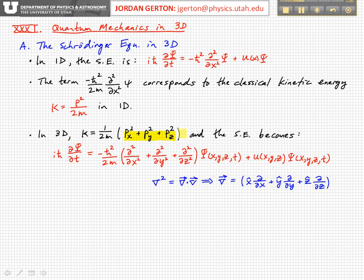then the Schrödinger equation becomes i h-bar d psi dt. This left side does not change compared to what we had up here. And now we substitute in the expressions that we have, basically operator expressions for px, py, and pz. So this will give you minus h-bar squared over 2m, d squared by dx squared plus d squared by dy squared plus d squared by dz squared on psi.